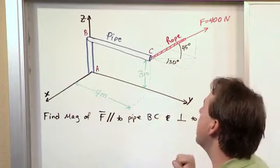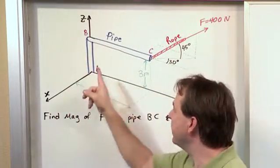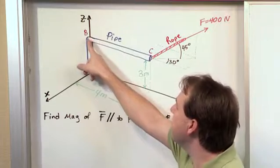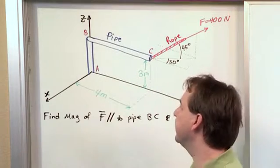Basically, we have a three-dimensional problem like this. The blue lines you can think of as a pipe. So you have some pipe going straight up the z-axis, and then the pipe continues on parallel to the y-axis, forming this dog-leg looking thing here.